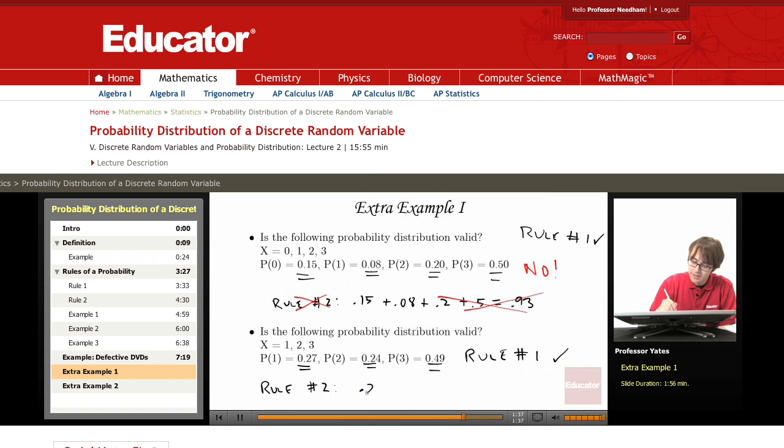So I'm going to add all these probabilities. I'm taking 0.51 plus 0.49, that adds up to 1, so the answer for this one is yes, it's a valid probability distribution.